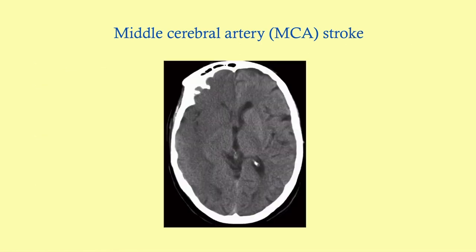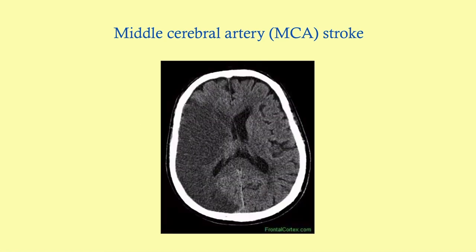Here's an MCA stroke on CT — can you see the hypoattenuation? This one is on the right side. And here's another one, more obvious — again on the right.